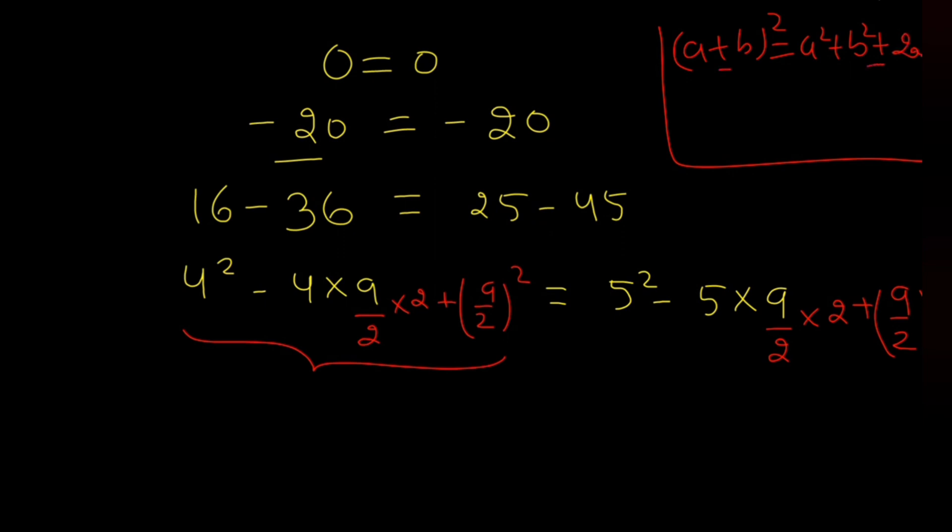Oh sorry, I have minus here. So this is a, a squared. This is 2ab and this is b squared.